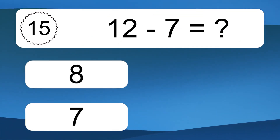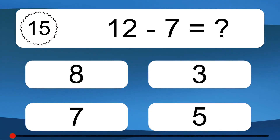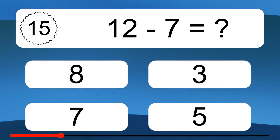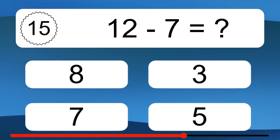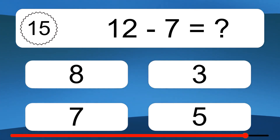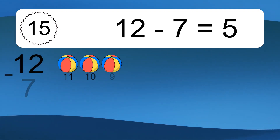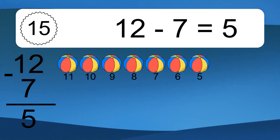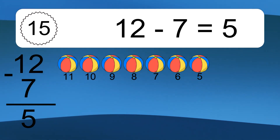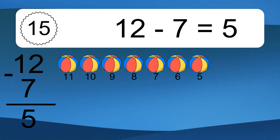12 minus 7 equals what? 12 minus 7 equals 5. Let's count it: 11, 10, 9, 8, 7, 6, 5.